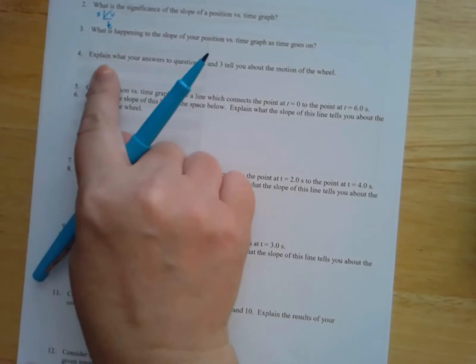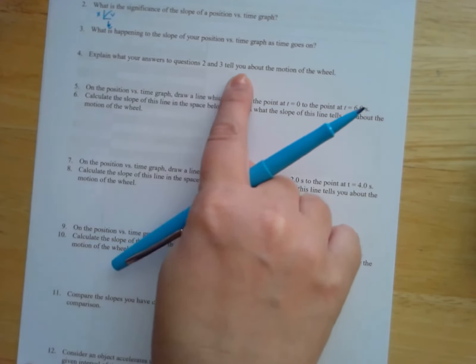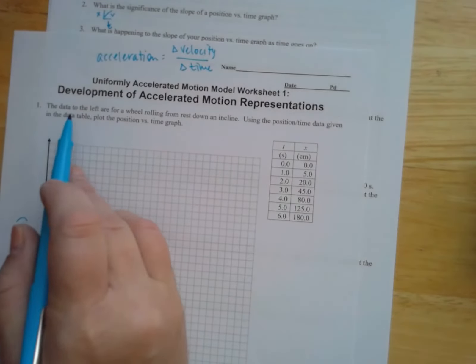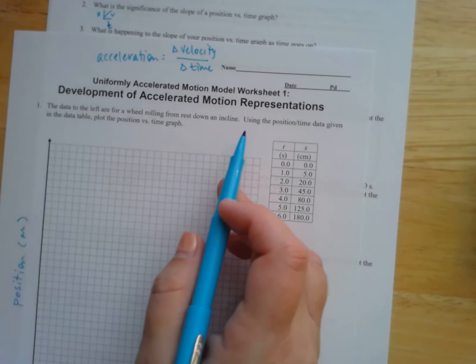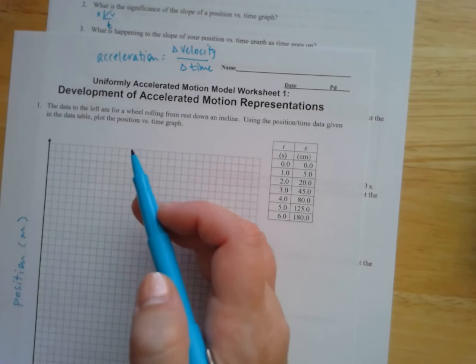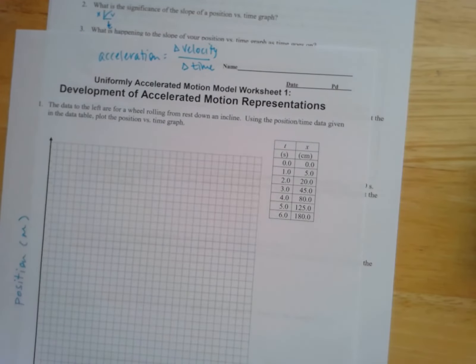Here it says explain what your answers to questions two and three tell you about the motion of a wheel. So if we take a look back at this, tells us the data is for a wheel that's rolling from rest down an incline. So in our pivot interactives activity, we were looking at dry ice sliding down a ramp. This is a wheel that's rolling down the ramps. This is closer to being like a car.